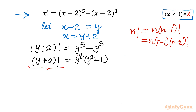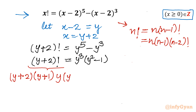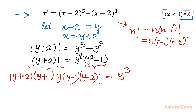Applying the recursive formula to the left-hand side, I expand (y plus 2) factorial as (y plus 2)(y plus 1)(y)(y minus 1)(y minus 2) factorial. On the right-hand side, y cubed times (y squared minus 1) can be rewritten using the difference of two squares formula as y cubed times (y plus 1)(y minus 1).